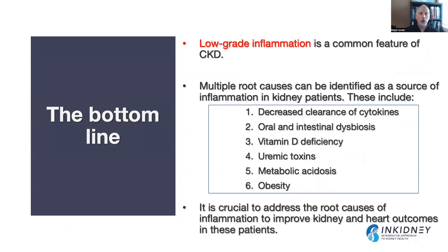The bottom line: low-grade inflammation is a common feature of chronic kidney disease. There are multiple root causes that can be identified as sources of inflammation, including decreased cytokine clearance, oral and intestinal dysbiosis, vitamin D deficiency, increased uremic toxins, metabolic acidosis, and obesity. It is crucial that we address these root causes to improve kidney and cardiac outcomes for patients with chronic kidney disease.